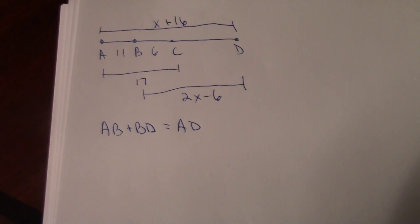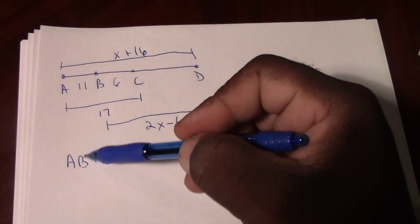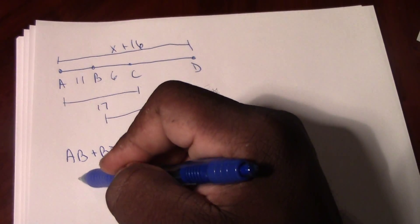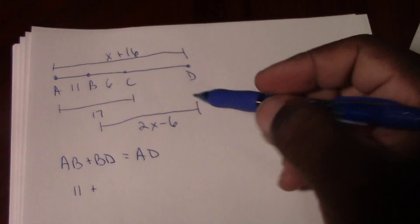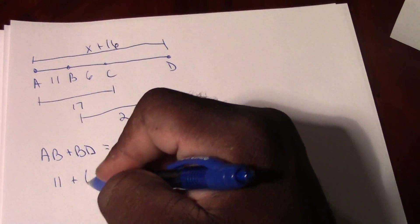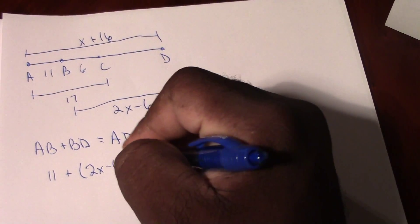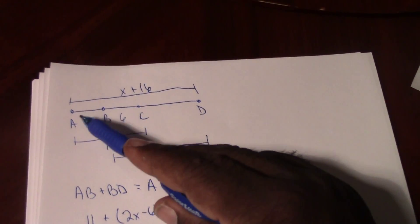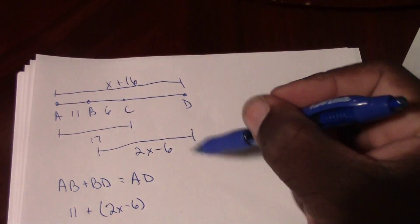Now we know the values of each of those segments. AB we just found was 11, BD which we're told is 2X minus 6, and that's going to equal AD which we're told is X plus 16.